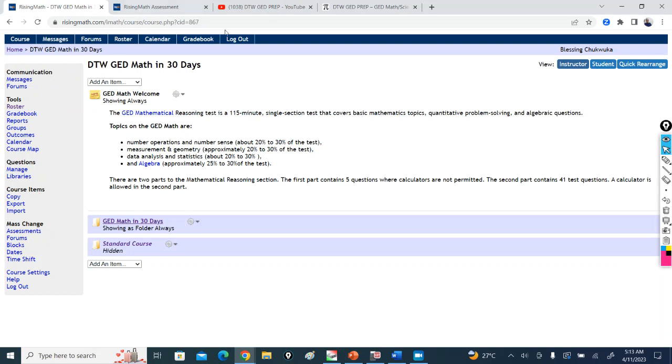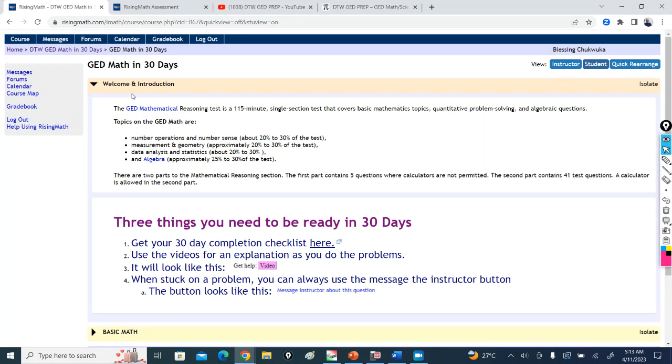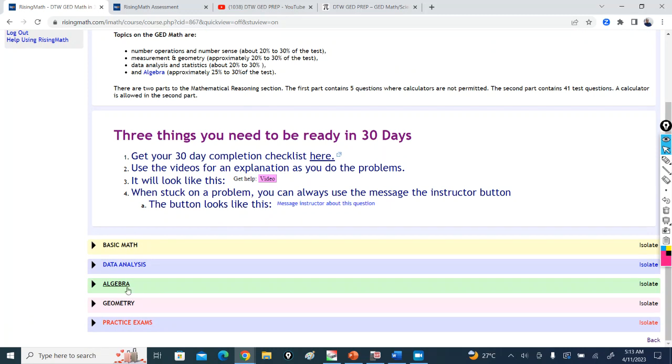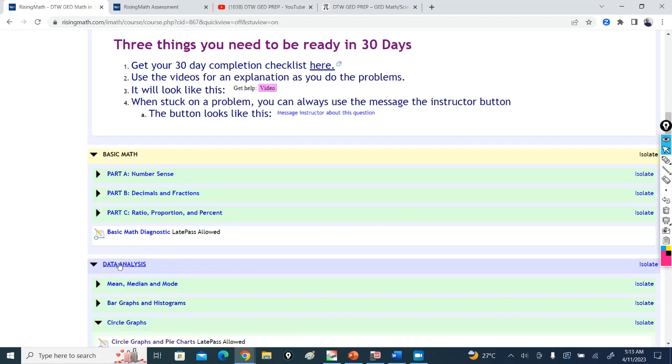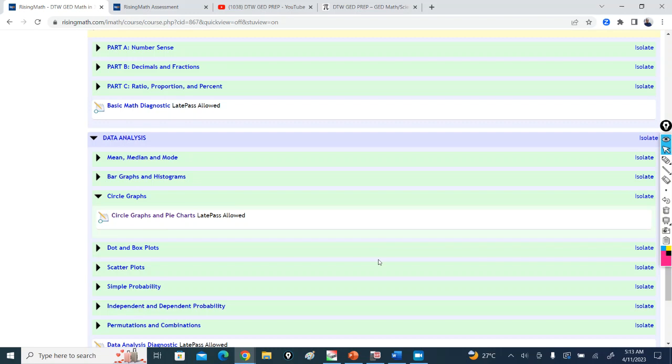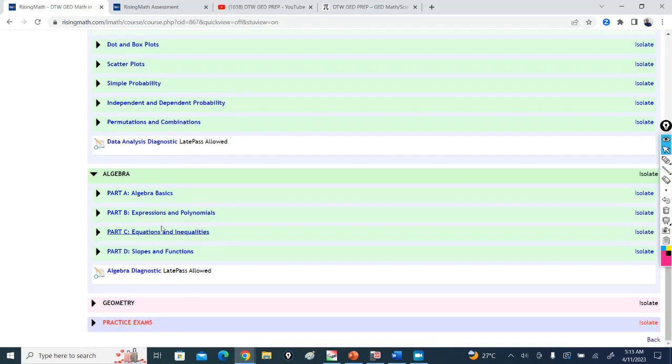So let me just quickly take you through this course. This is my own dashboard as an instructor. So this is the course. It contains everything, the four basic aspects of the GED, your basic math, number sense, your data analysis, which we're working on circle graphs here. And we're going to go into the circle graph and I'll show you how you can go through the course, everything, your algebra, your slopes, everything is in here.